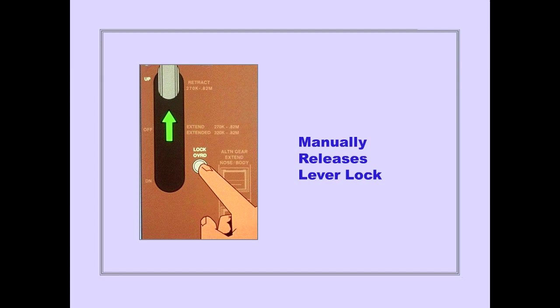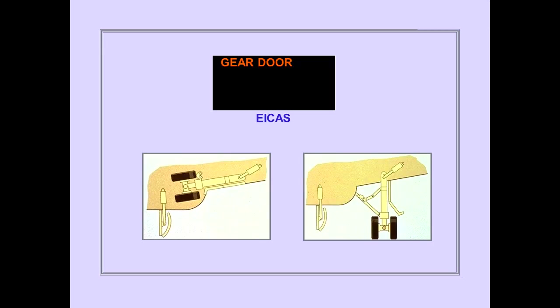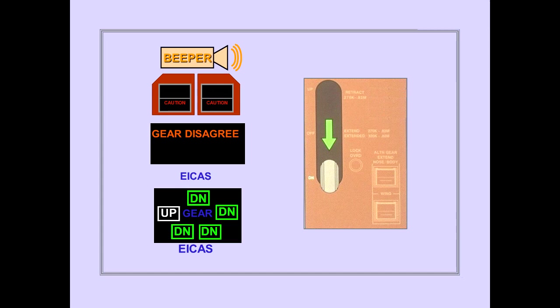The gear lever can then be moved to up. The ICAS advisory message gear door is displayed when any gear door is not closed and the gear is not in transit. When a gear door remains open, the airspeed limitation is the same as the gear extended speed: 270 knots or 0.82 Mach. The ICAS caution message gear disagree and the ICAS expanded gear indication are displayed when the gear lever is placed down and one or more gear does not extend.